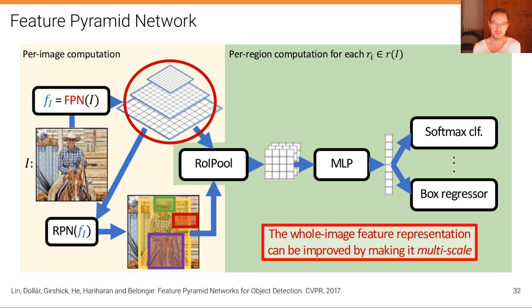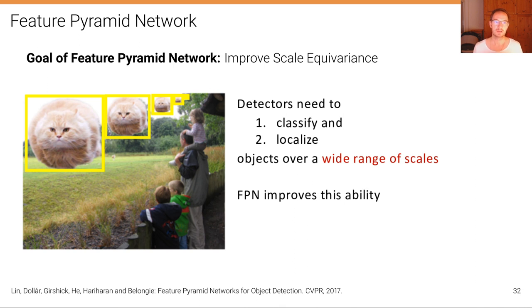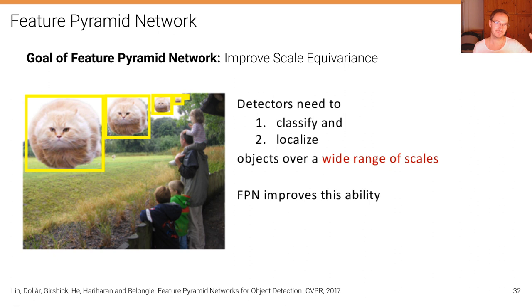One additional idea that has improved performance on top of this is the feature pyramid network. The whole-image feature representation can be improved by making it multi-scale. The goal of feature pyramid networks is to improve scale invariance and scale equivariance. A detector needs to classify and localize objects over a wide range of scales — for example, a cat might appear near the camera or very far away — and we want to detect it independent of its size.